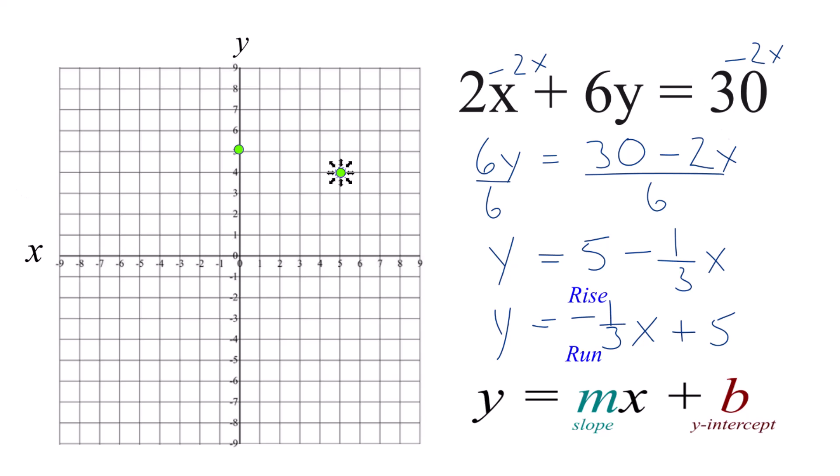We could do it again then. We could go down 1 and over 1, 2, 3, 4, 5. We're off the graph, but you can see that we could extend our graph paper and put a line through this.